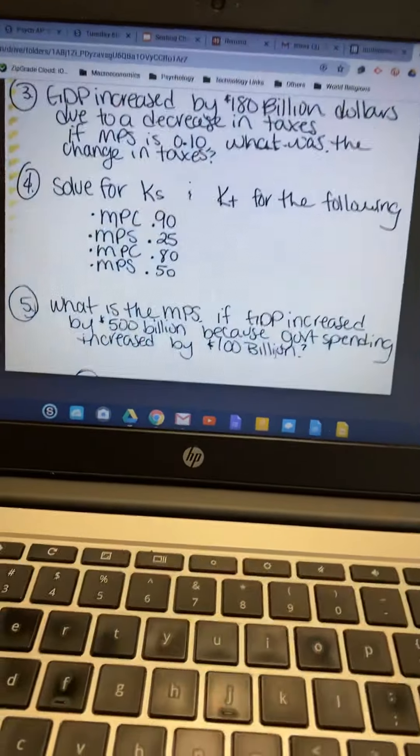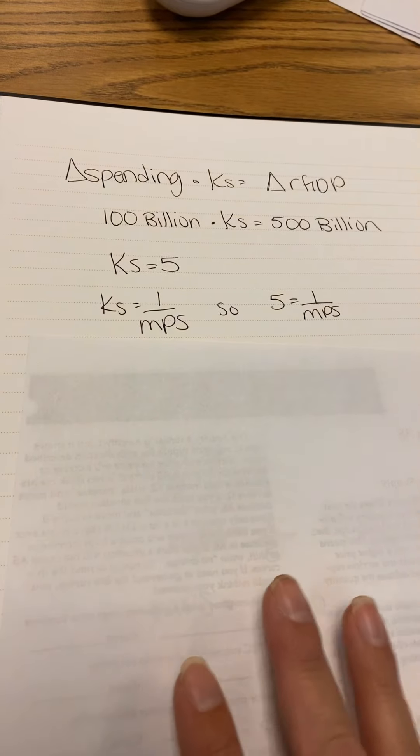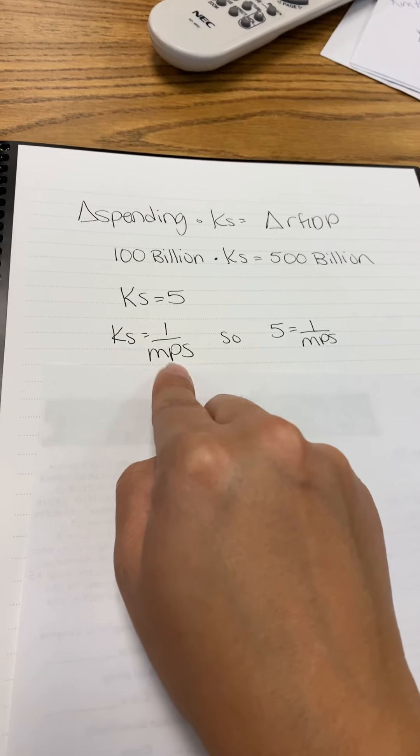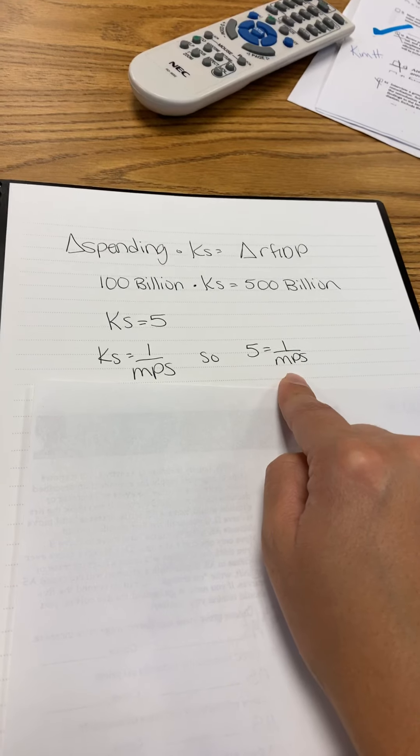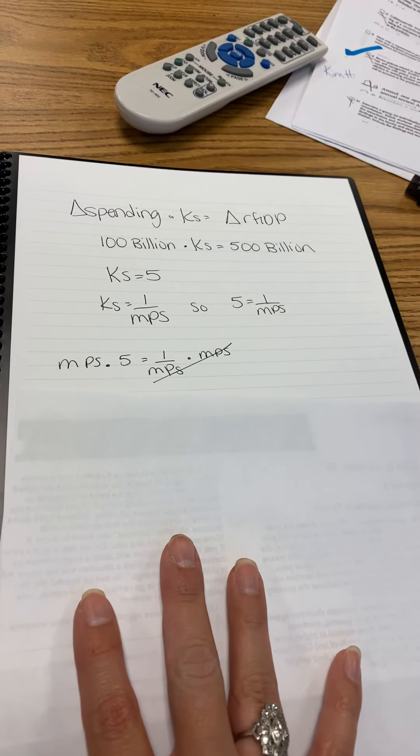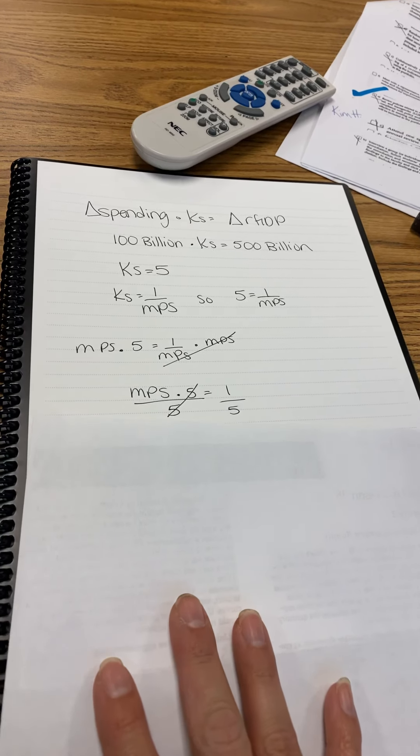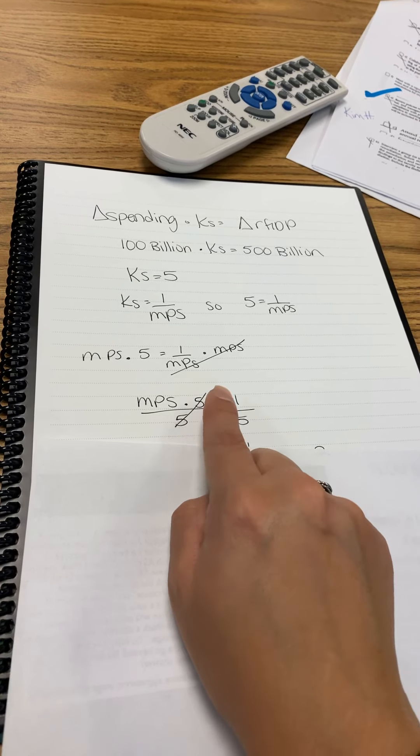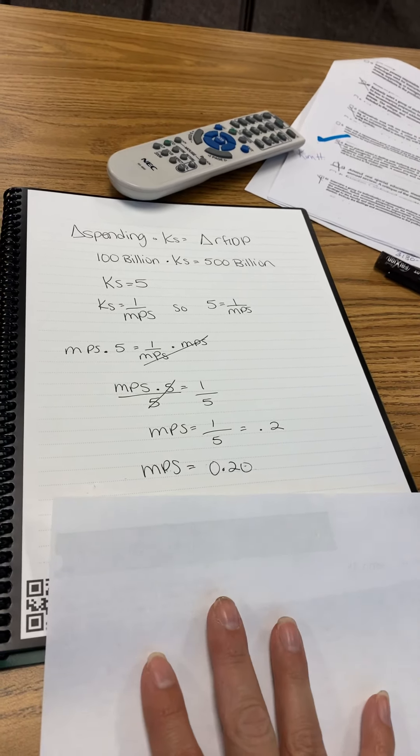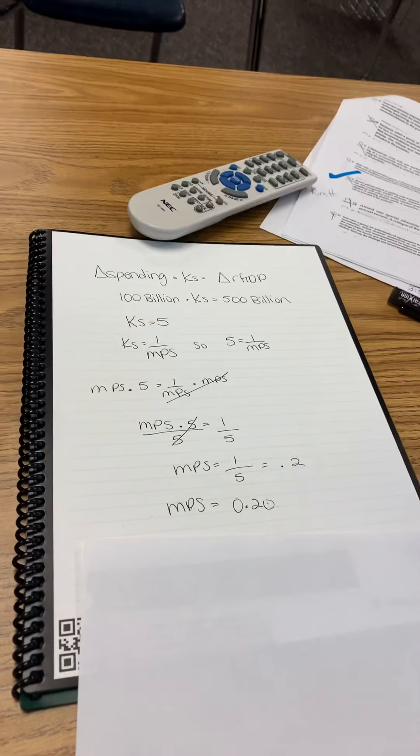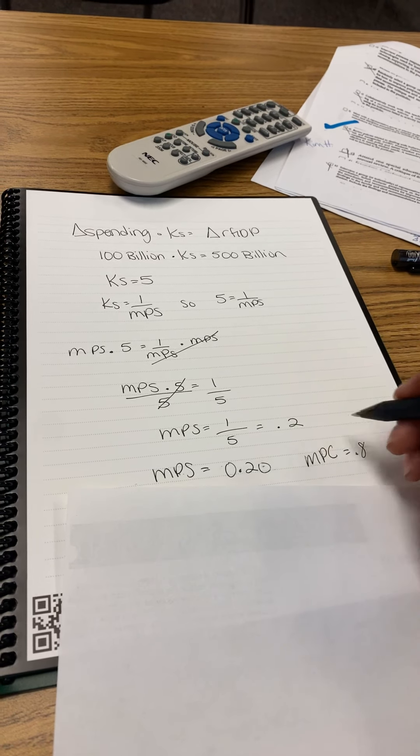But what are we solving for? We're not solving for KS. We're solving for the marginal propensity to save, MPS. If KS equals 5, and I know the equation for KS is 1 over MPS, then 5 equals 1 over MPS. I can multiply both sides by MPS. MPS times 5 equals 1. Then I divide both sides by 5. Eventually, I get MPS equals 1 fifth, which is 0.2. Remember, I could have also asked for MPC. If that was the case, MPC would equal 0.8 because adding them together equals 1.